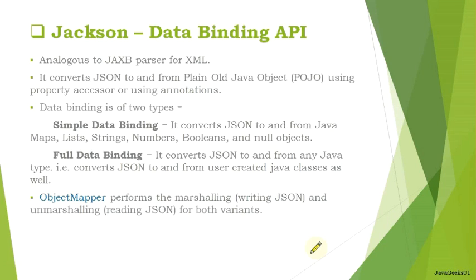The Data Binding API is analogous to JAXB parser for XML. It converts JSON data to POJO using property accessors and annotations — Jackson also provides annotation-based capabilities. Data Binding is of two types: Simple Data Binding, which converts JSON data to and from Java Maps, Lists, Strings, Numbers, Booleans, and null objects; and Full Data Binding, which converts any Java object to JSON and vice versa.